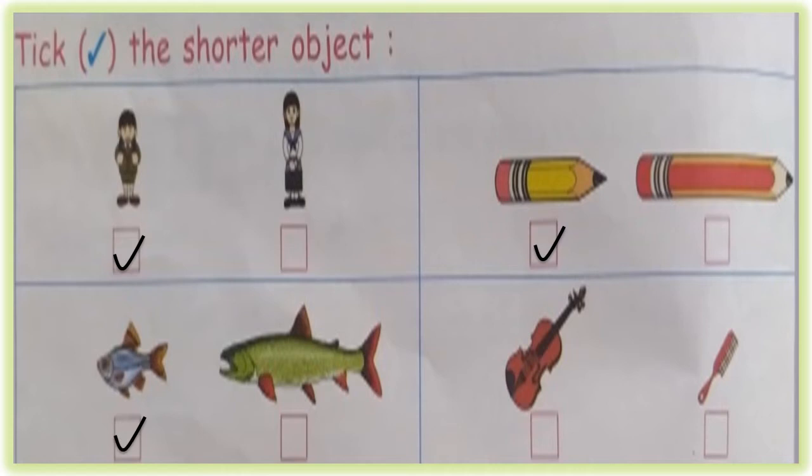See the last objects, violin and comb. Which is the shortest object? Comb is the shortest object.